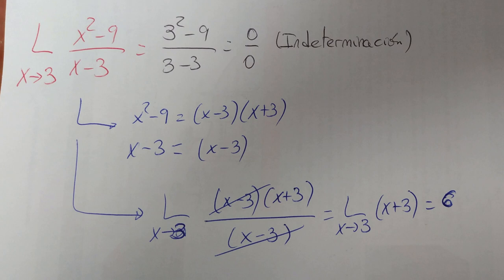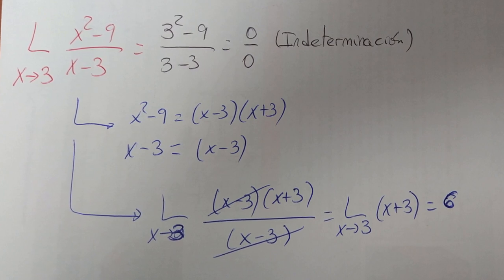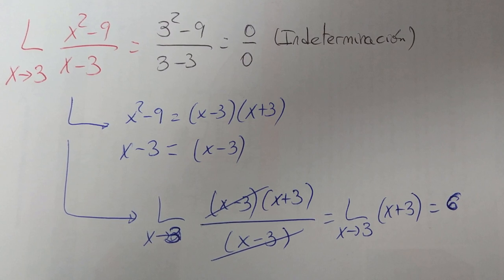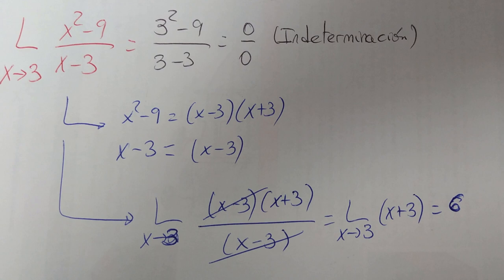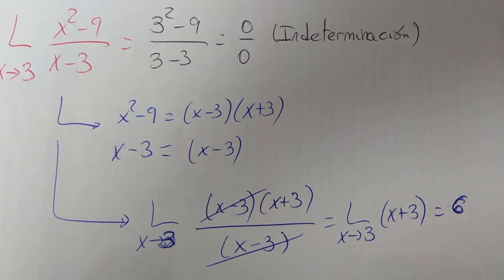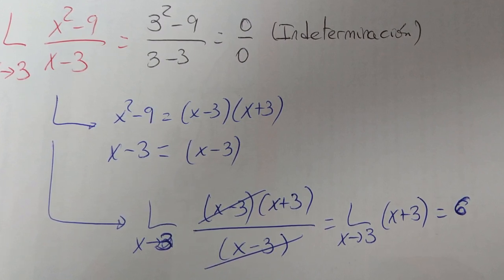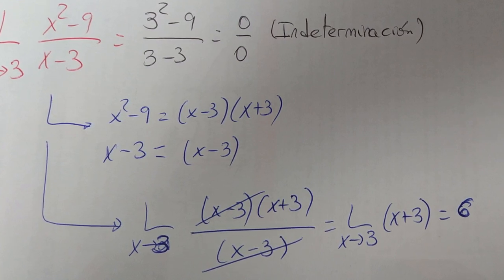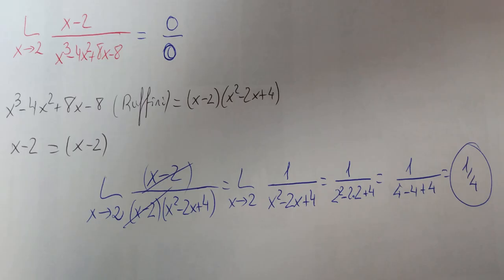Límite cuando x tiende a 3 de (x² - 9) / (x - 3). Al sustituir da 0/0. En este caso hay que factorizar los polinomios del numerador y el denominador. x² - 9 es suma por diferencia: (x - 3)(x + 3), y x - 3 al ser polinomio de primer grado es x - 3. Quitamos los (x - 3) y nos quedaría un límite cuyo resultado nos da 6 al sustituir. Otro límite: cuando x tiende a 2 de (x - 2) / (x³ - 4x² + 8x - 8). Es 0/0; factorizamos por Ruffini: (x - 2)(x² - 2x + 4). Eliminamos factores comunes, nos quedaría 1/(x² - 2x + 4) = 1/(4 - 4 + 4) = 1/4, resultado final. Hay que factorizar siempre los polinomios.